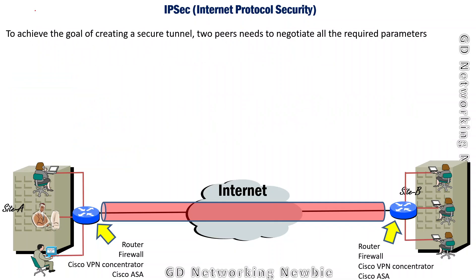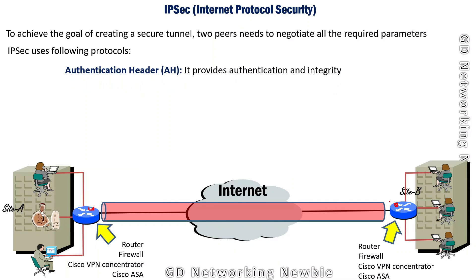To achieve the goal of creating a secure tunnel, the two peers — in our case router 1 and router 2 — need to negotiate all the required parameters to provide confidentiality, integrity, authentication, and secure key exchange. For that, IPSec uses the following protocols. It uses Authentication Header (AH), which provides authentication and integrity for messages being sent between these two points.